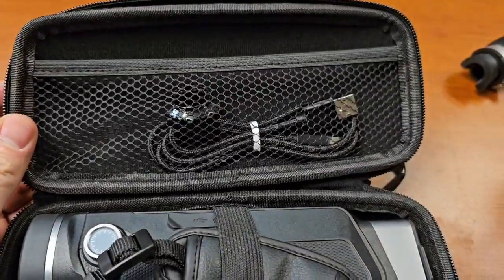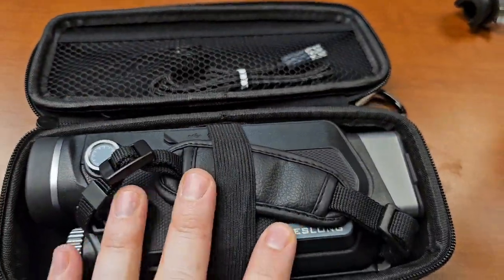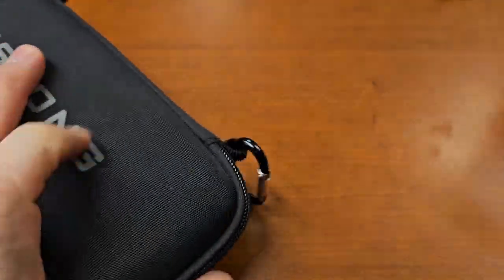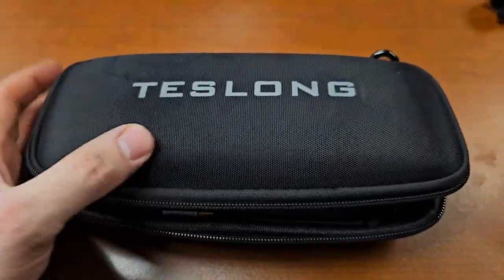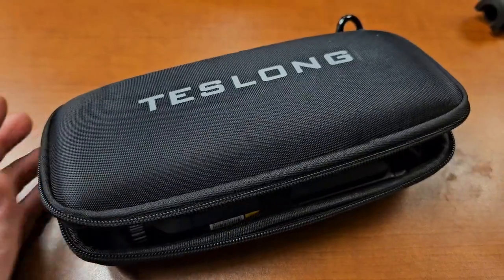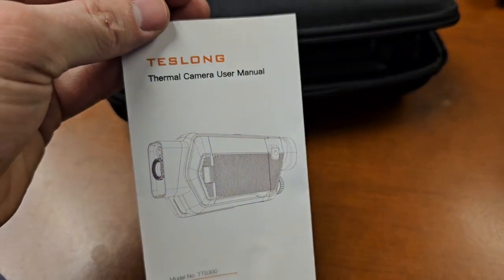Alright, so you get the nice case, you get a charger, you get a little adjustment dial. Everything fits neatly in here and I like that it has a carabiner clip because I was clipping this on my side here. You also have a user's manual and a user's manual here.